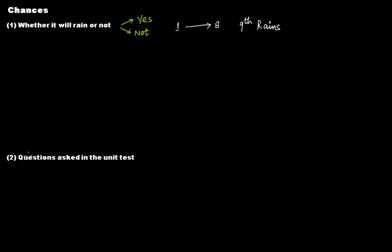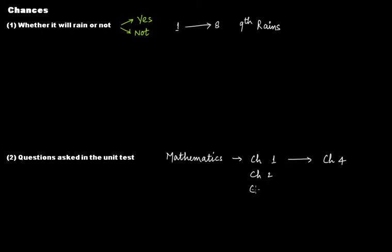The second example is questions asked in the unit test for the subject mathematics. Your teacher tells you that the questions will be asked from four chapters — chapter one up to chapter four. You study chapters one, two, and three very properly, and you decide to leave chapter four, thinking you'll manage from these three chapters. So you take a chance.